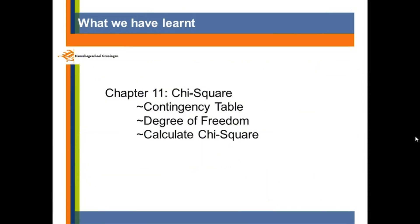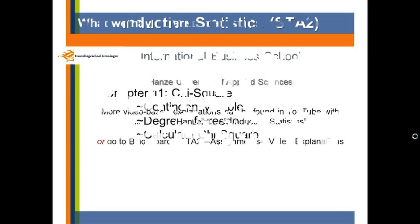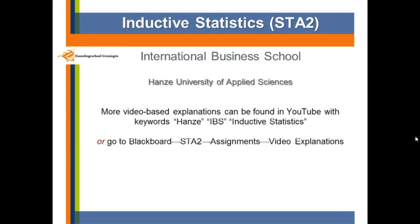This is what we have learned from the chi-square: what is the contingency table, how to get a degree of freedom, and how to calculate the chi-square. For more video explanations, you can go to the blackboard, or you can go to YouTube with the keywords Hansa IBS and inductive statistics. Thanks for watching.